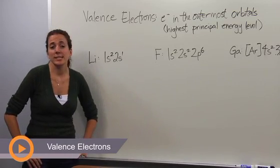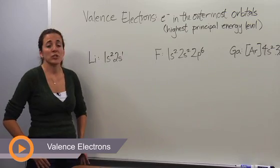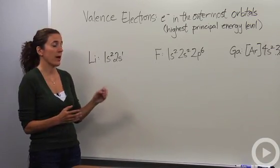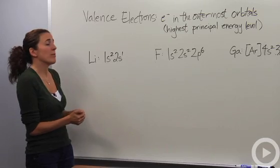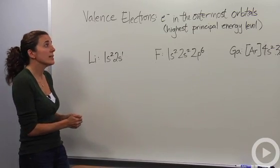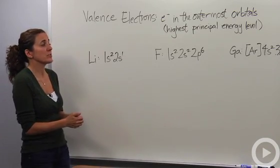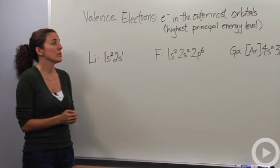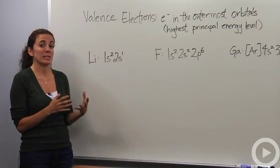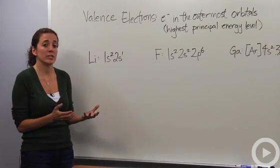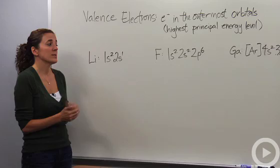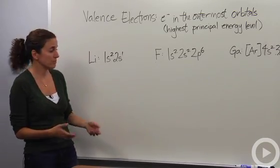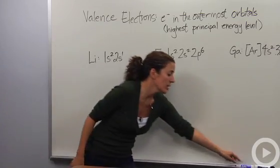We're going to talk about valence electrons. We know electrons are the negatively charged particles in an atom — they're the ones surrounding the nucleus. Valence electrons are electrons in the outermost orbitals, the highest principal energy level. They're the ones responsible for bonding and the chemical properties of each element, so they're the ones we'll be using much more often as we go on.